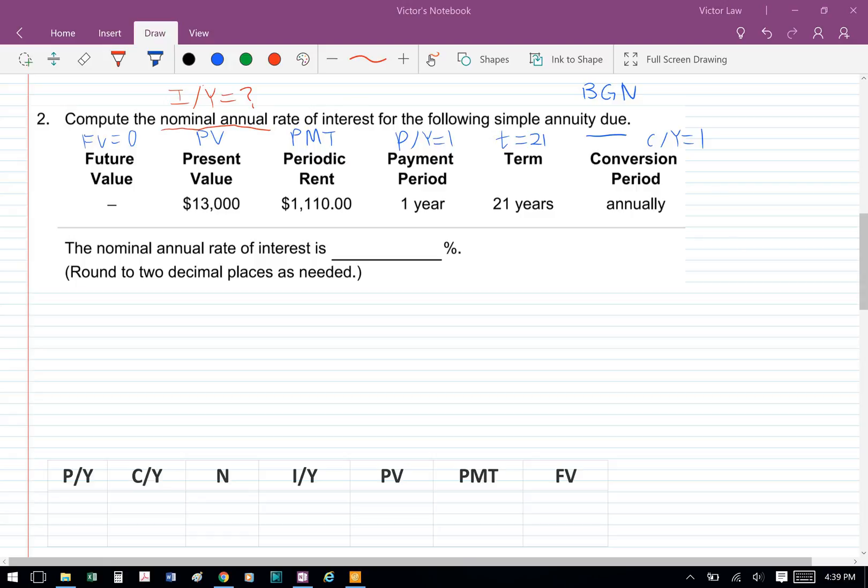And then because this is annuity due, annuity due means that the payments are made at the beginning of the period. So we have to use BGM mode.